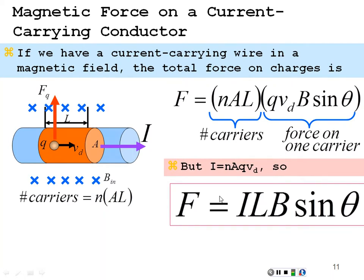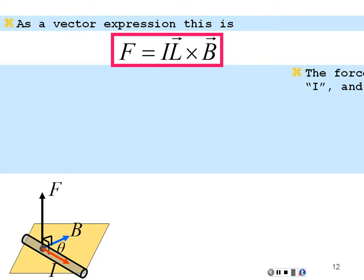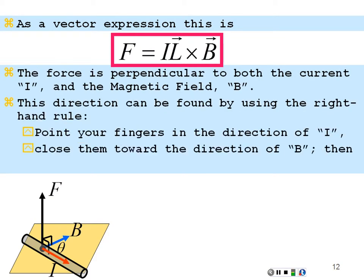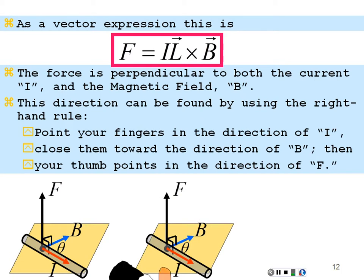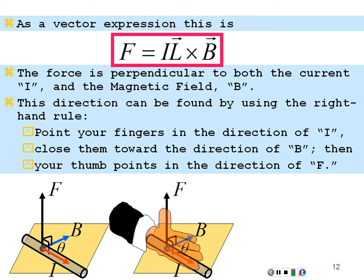In cross product form, the force on a current-carrying wire is F = I(L⃗ × B⃗), where L⃗ is a vector with magnitude equal to the wire length and direction along the current. The direction is again found by the right-hand rule: point fingers in the direction of the current, close toward the magnetic field, and the thumb points in the direction of the force.